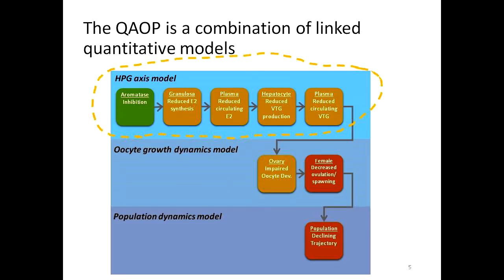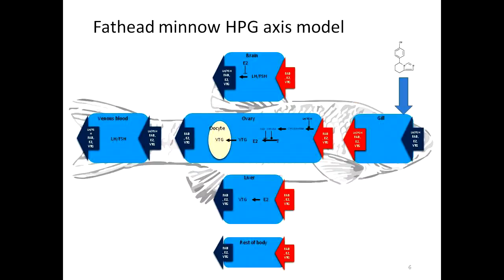I will talk about the three models and how they link together. Starting with the HPG axis model — this is the diagram for the fundamental HPG axis model. The chemical enters through the gut compartment in the fish body and distributes through the bloodstream, where it reaches the target site. We use the model chemical phytosol here, where phytosol binds to aromatase and inhibits the conversion from testosterone to estradiol.